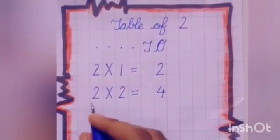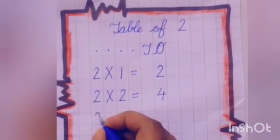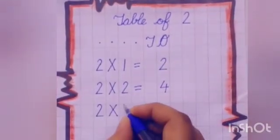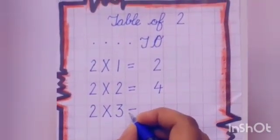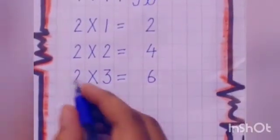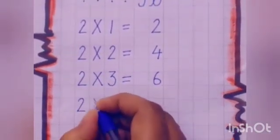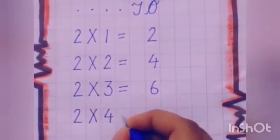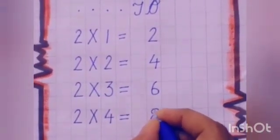So we will write it under 1s. 2 2s are 4. Now, again, leave one box. 2 3s are 6. Again, 6 is a single digit, so we will write it under 1s. 2 3s are 6. Again, leave one box. 2 4s are 8. Again, 8 is a single digit, so we will write it under 1s. 2 4s are 8.